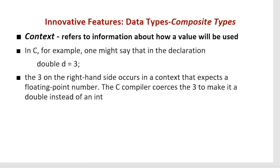Context refers to information about how a value will be used. For example, in C, 'double d = 3' — the 3 on the right-hand side occurs in a context that expects a floating-point number. The C compiler forces the 3 to be a double instead of an int. That is context.